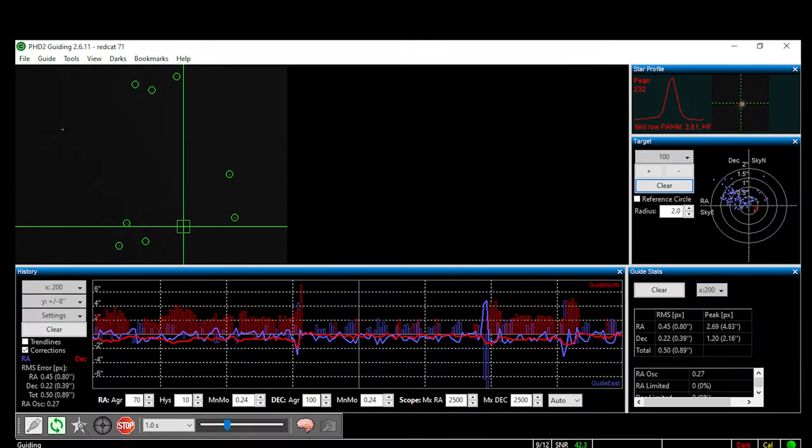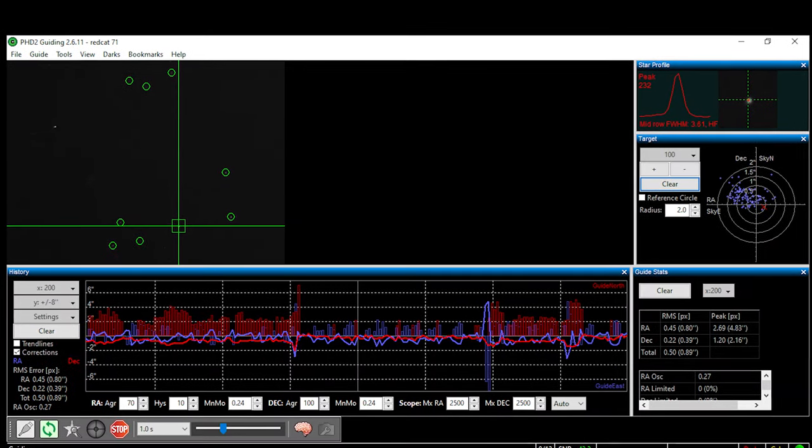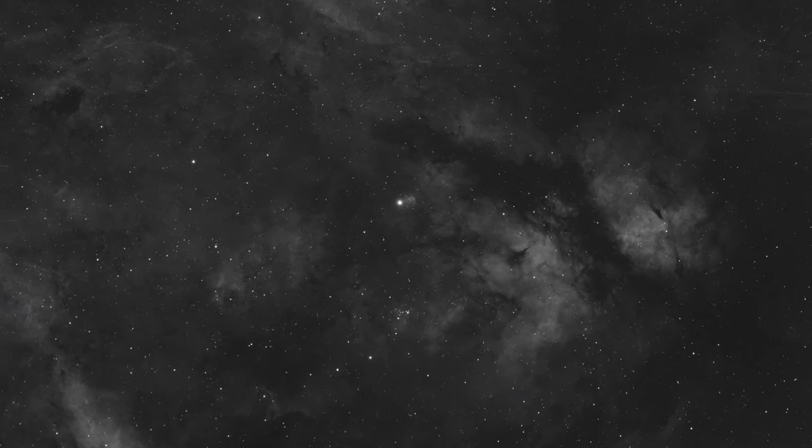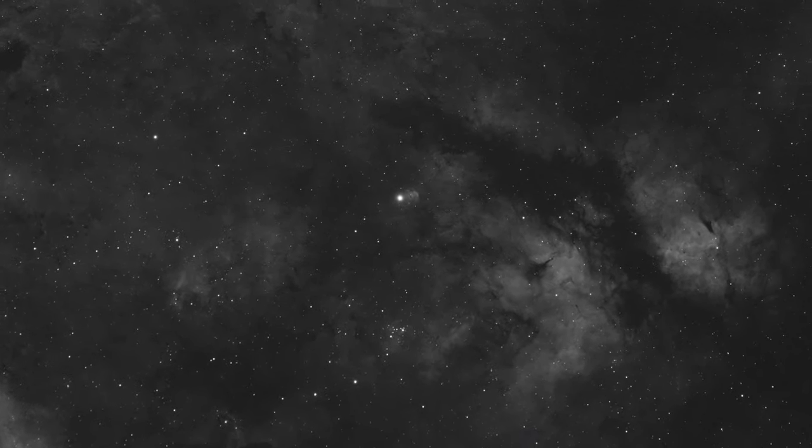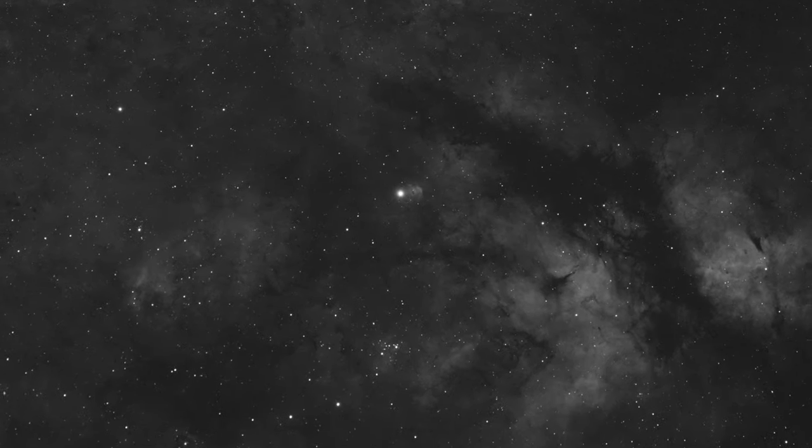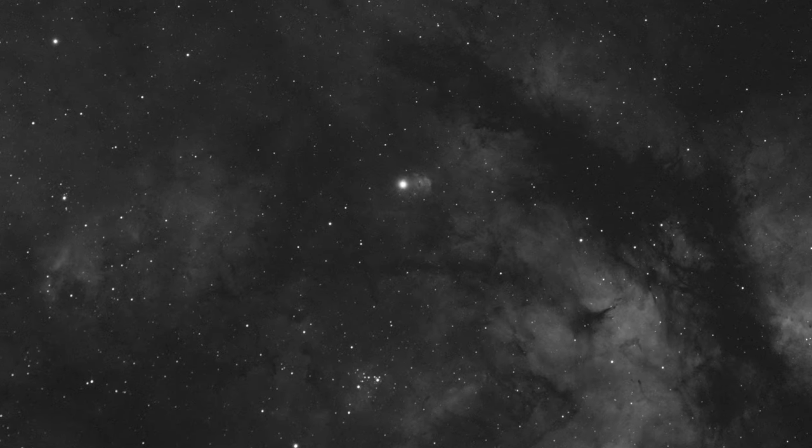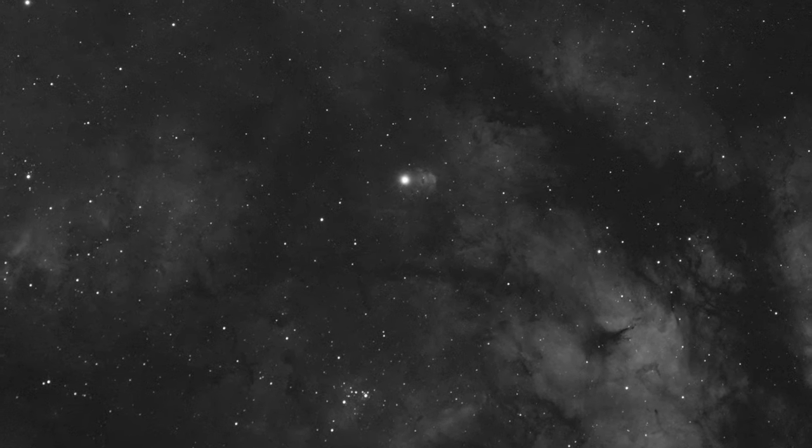First I'm going to share with you my guide graphs for the REDCAT51 as well as the results for the REDCAT51 and then we'll move on to the Apertura 72 EDR. When guiding with the REDCAT51 I had a total RMS error of 0.89 arc minutes over a period of 400 pulses. My longest possible guided exposure was 15 minutes. I was able to achieve perfectly round stars within this 15 minute sub exposure and this was constant over a series of 15 minute sub exposures. This was highly impressive.